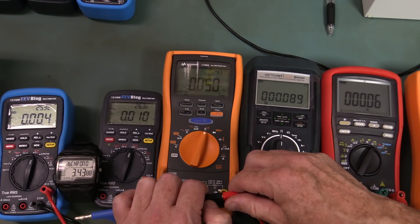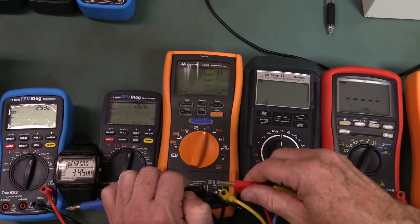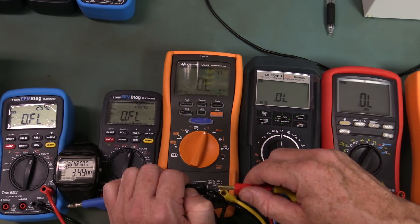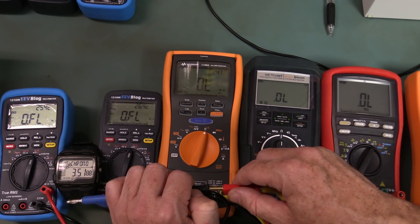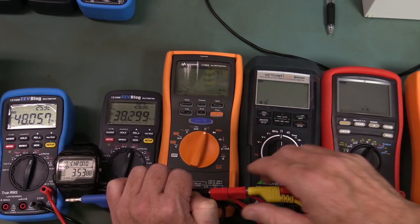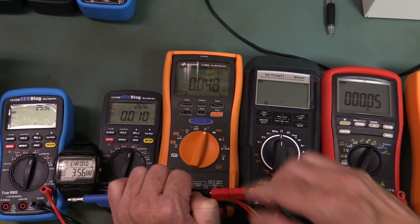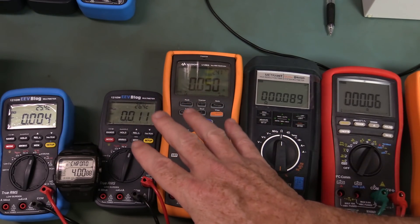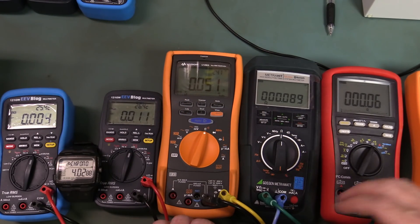U1282A. And I have in some cases seen it faster, so it just I think it depends on residual charge in the input sockets or something like that. There we go, I have seen it slightly quicker. Anyway, let's say it's on par with the Keysight U1282A.